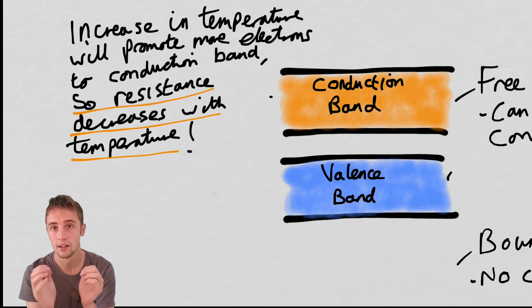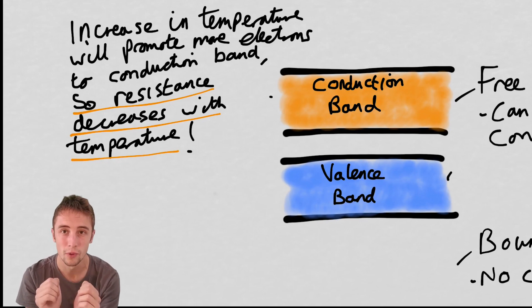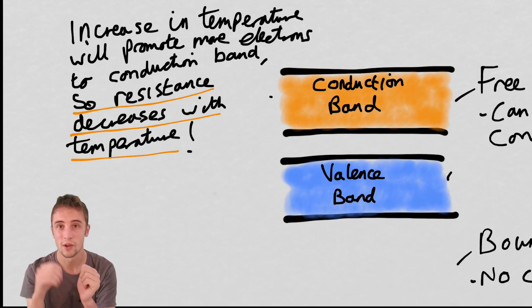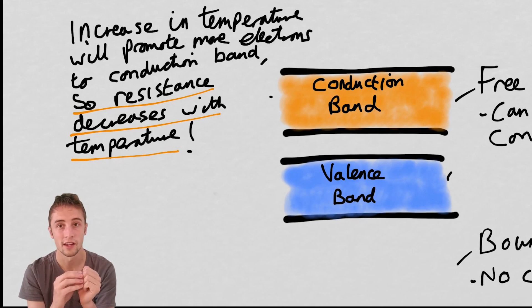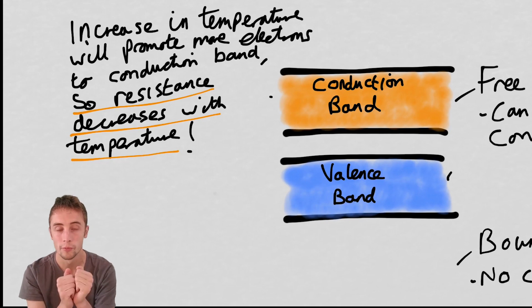LDRs — light-dependent resistors — work in a very similar way. Instead of heat, you have light that gives these electrons enough energy to make the jump up to the conduction band and take part in conduction.